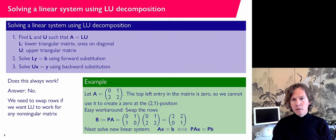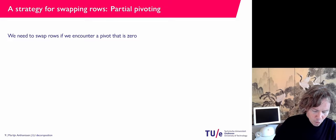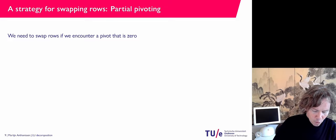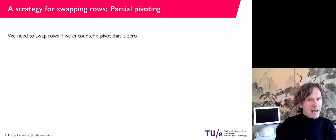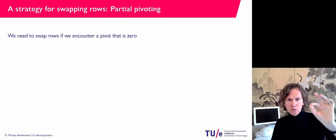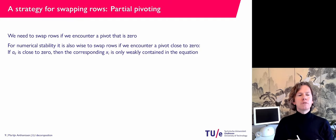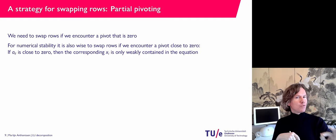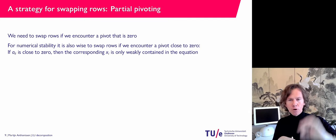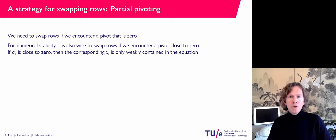We need to swap rows if we want LU factorization to work for any non-singular matrix. In numerical mathematics, you can wonder: when is a number zero? If it is very small, should it actually be treated as zero? For numerical stability it makes sense to swap rows not only when you encounter a pivot that is exactly zero, but also when a pivot is close to zero — because a very small diagonal entry is not a good equation to eliminate unknowns from.